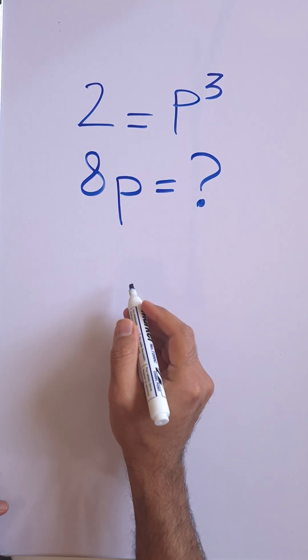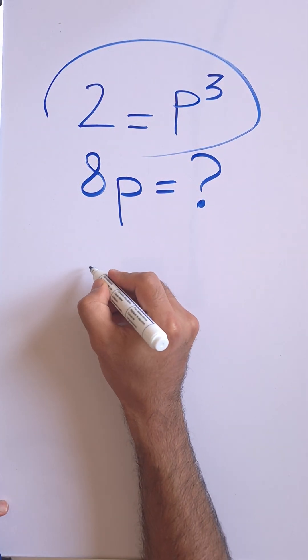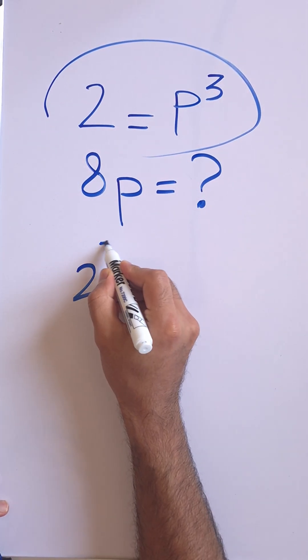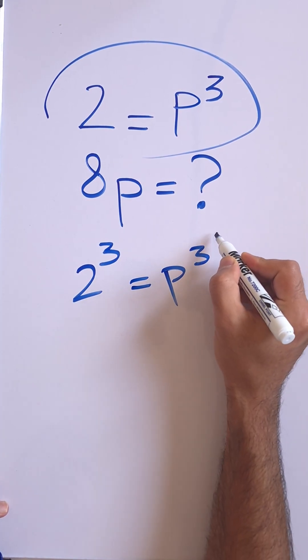Let's raise both sides of the first equation to the power of 3. So 2 to the power of 3 equals p to the power of 3, and to the power of 3 the whole thing.